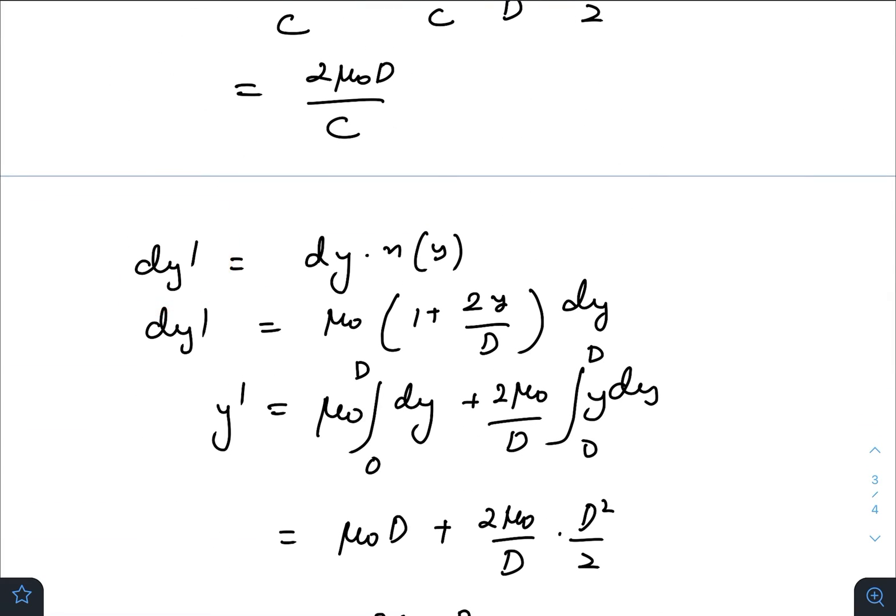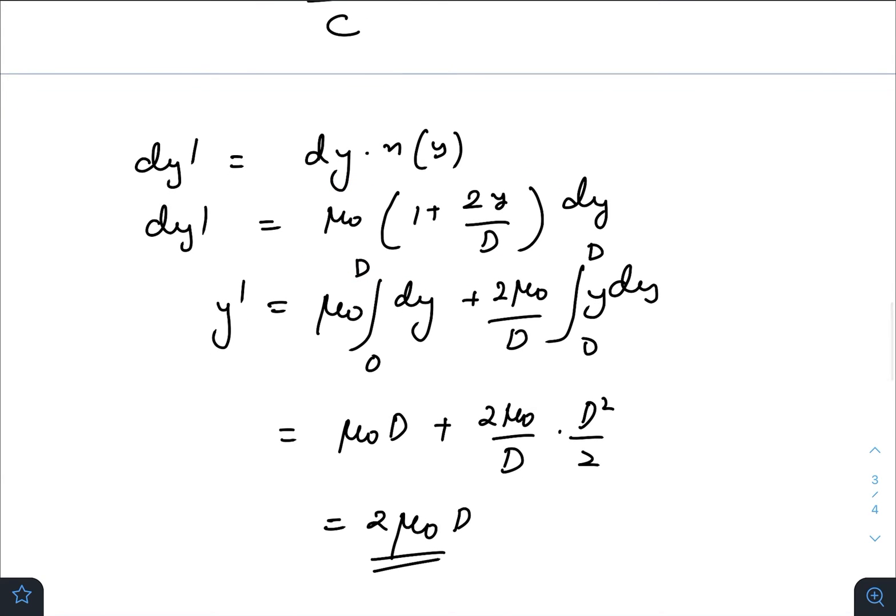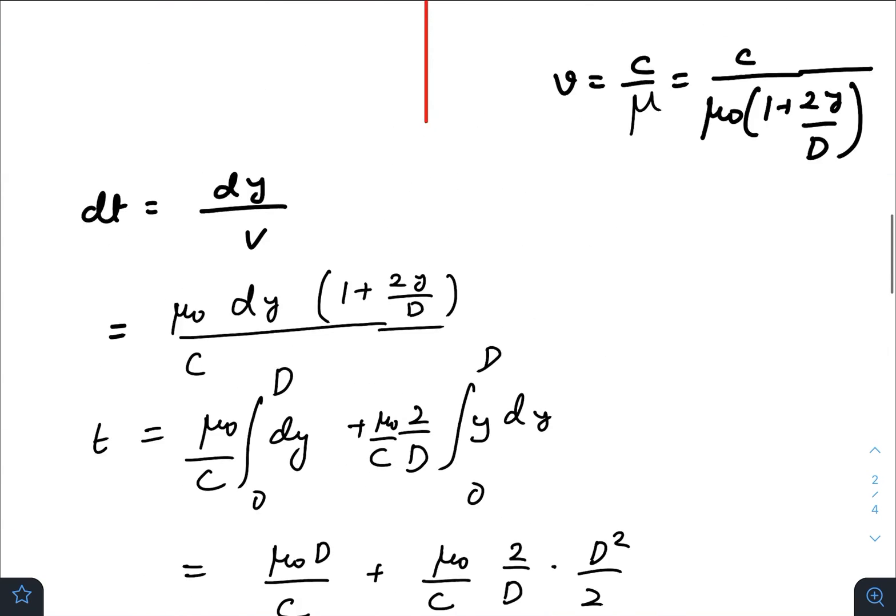The refractive index is this function of y. For the optical path of the whole ray traveling through the slab, we need to integrate from 0 to D. After integrating, we get 2μ₀D, so option D is also correct.